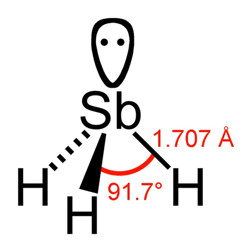Stibane is a chemical compound with the formula antimony trihydride (SbH3). A pnictogen hydride, this colorless gas is the principal covalent hydride of antimony, and a heavy analog of ammonia. The molecule is pyramidal with HSbH angles of 91.7 degrees and Sb-H distances of 170.7 pm (1.707 Å). This gas has an offensive smell like hydrogen sulfide — rotten eggs.